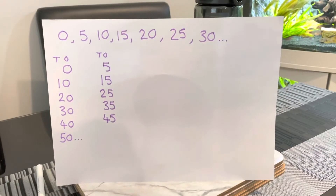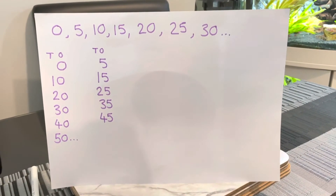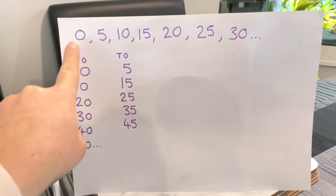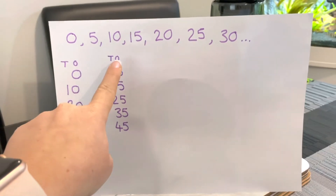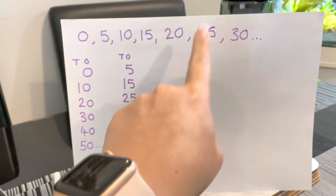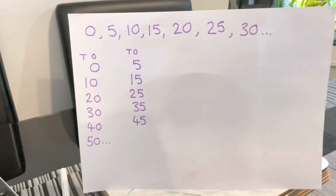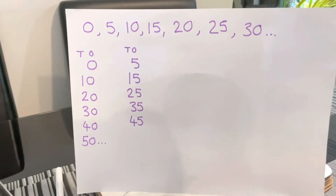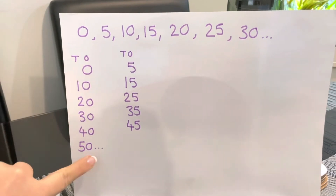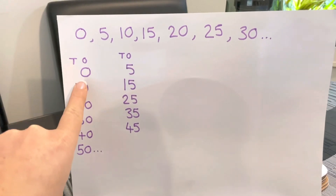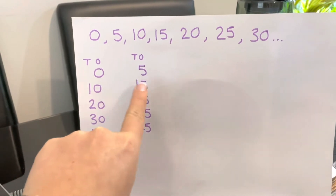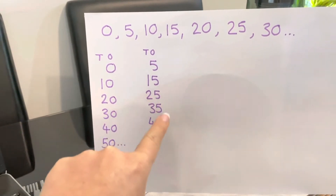When we move on to counting in fives there's also a pattern. We go zero, five, ten, fifteen, twenty, twenty-five, thirty. And most of us can do that now. But the important thing to know here is that the ones column starts at zero, switches to a five, back to zero, back to five, back to zero, back to five. So when you count in fives there is a pattern.